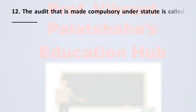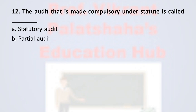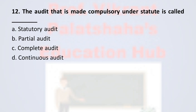Question number twelve: the audit that is made compulsory under the statute is called — option A statutory audit, option B partial audit, option C complete audit, and option D continuous audit. The correct option is option A, statutory audit.